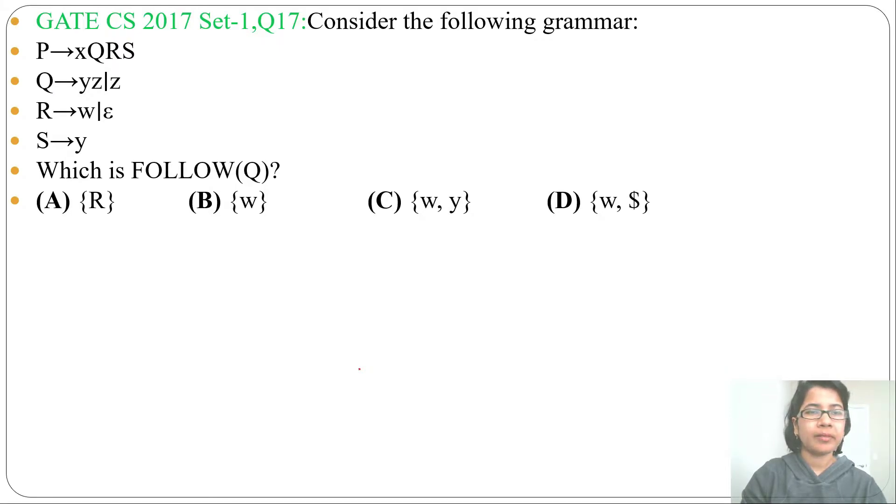Hi, let's solve one previous question on parsing. This question was asked in GATE year 2017, Set 1, Question Number 17. Consider the following grammar - a grammar is given - which is FOLLOW of Q. Four options are given.